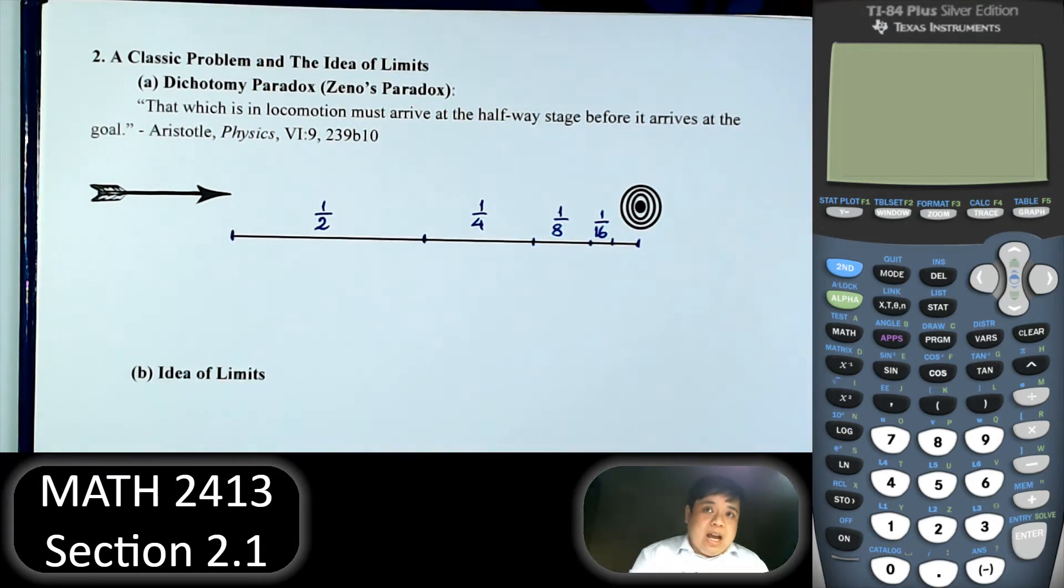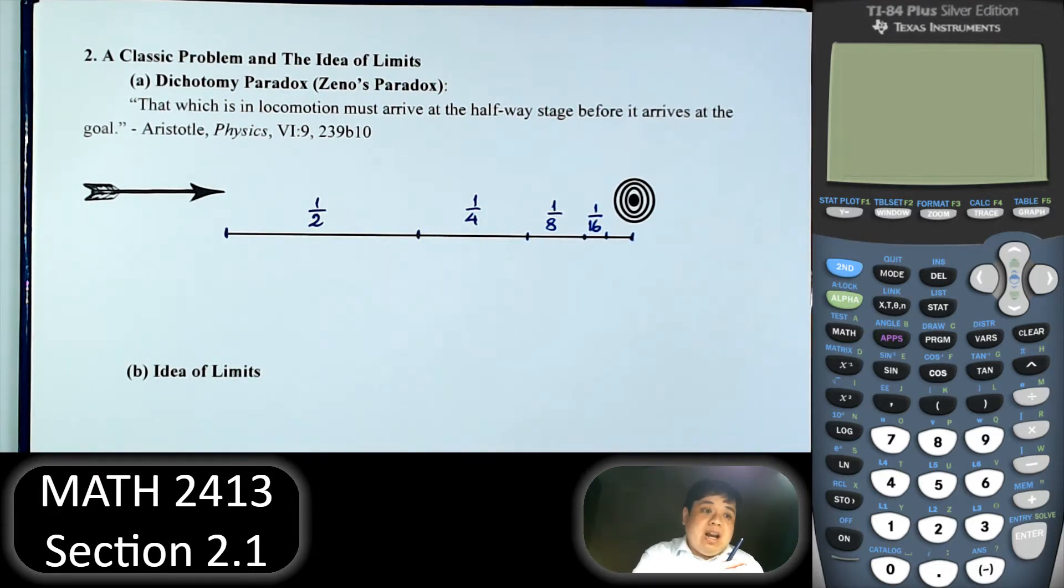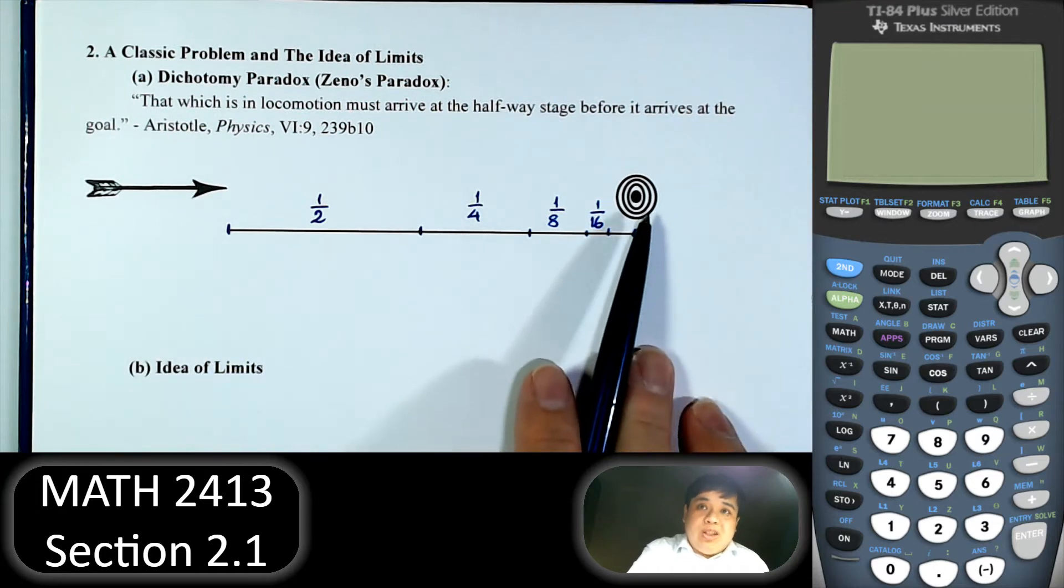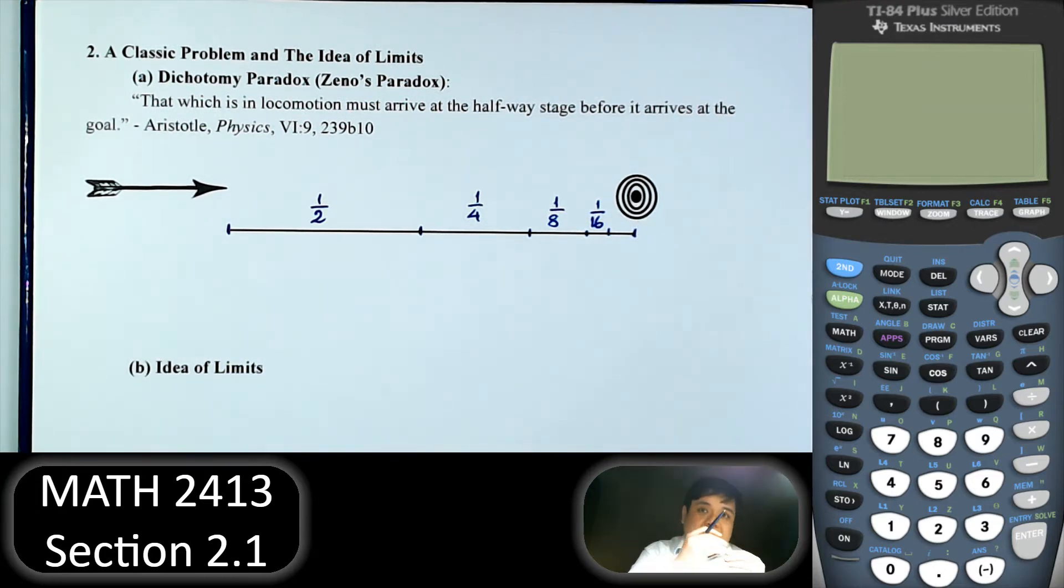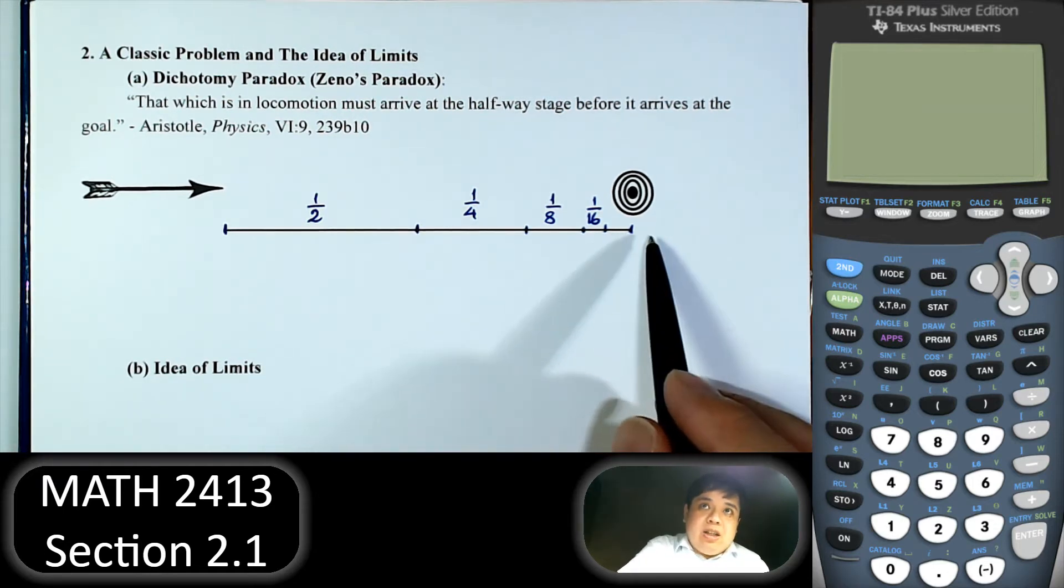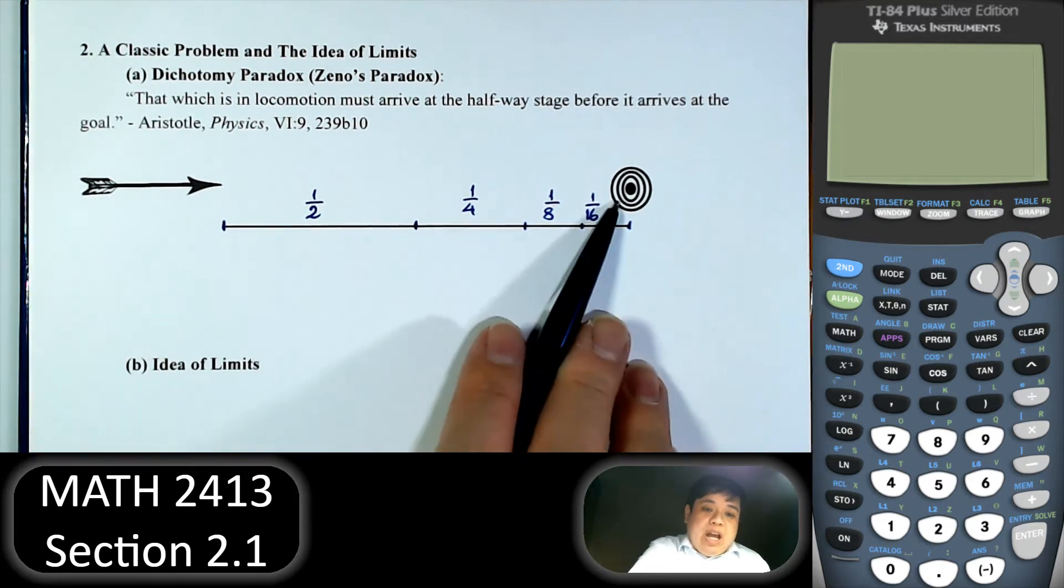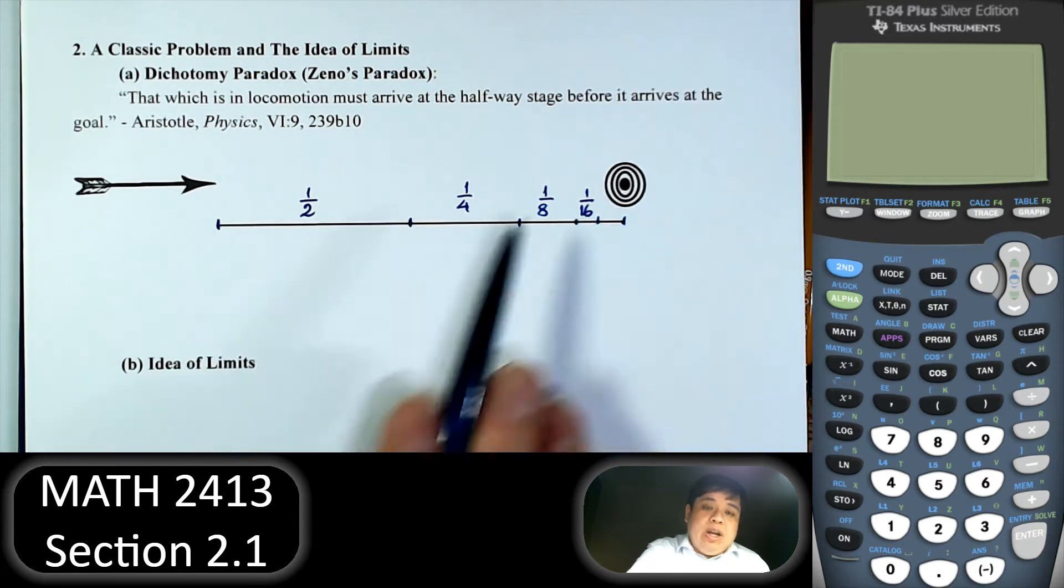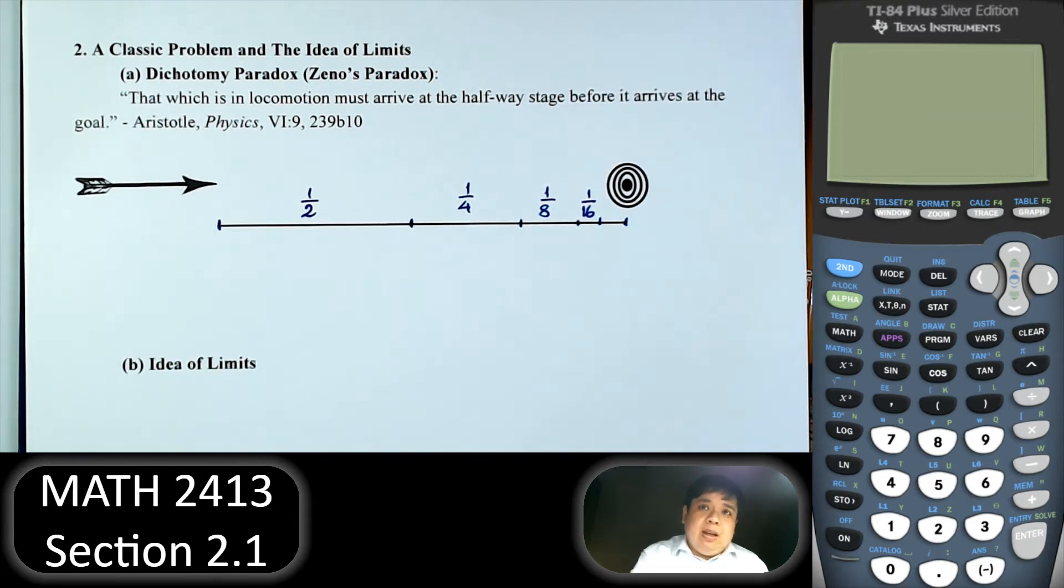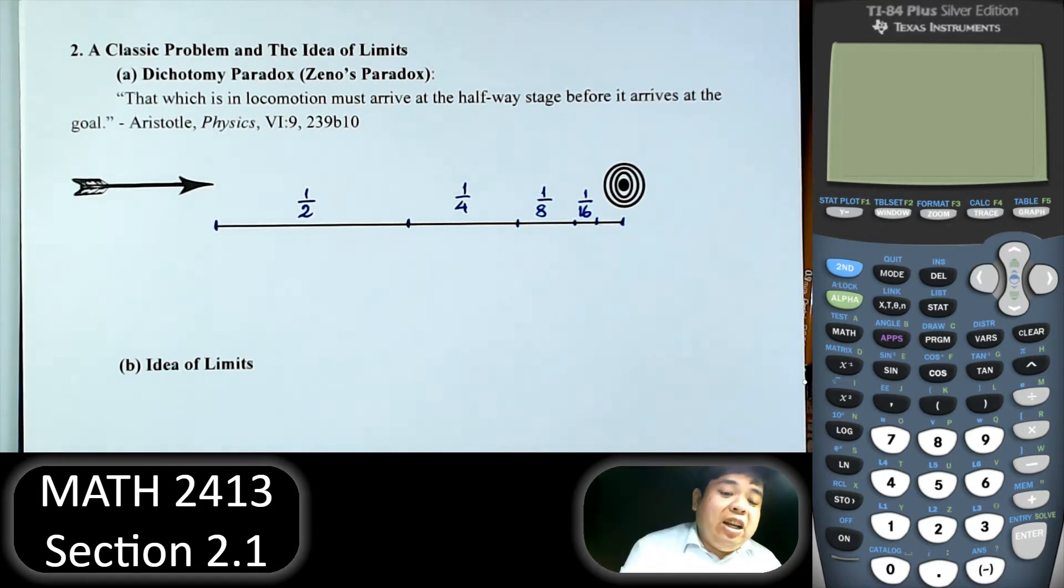And Zeno argues that this process can continue. Essentially the arrow cannot hit the target, because it doesn't matter how close the arrow to the target is, it always can get closer. It doesn't matter how small the distance is, it can always be able to divide by 2. So that's the idea. But of course we know that is not true. If we shoot the arrow accurate enough, it will hit the target. With all of that, now comes the idea of limit.